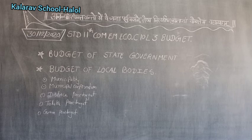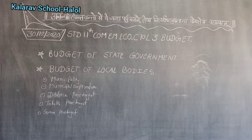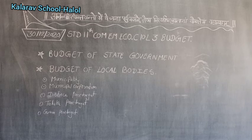Primary deficit is obtained after including the interest payment from the fiscal deficit. Interest payment constitutes an important part of government expenditure.